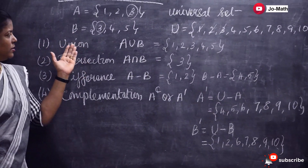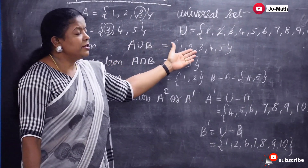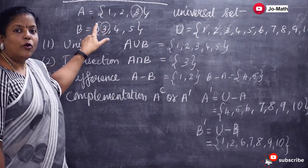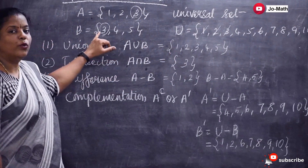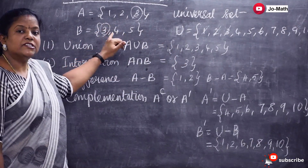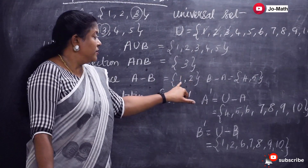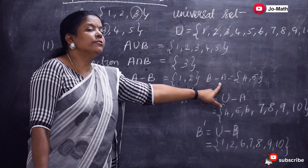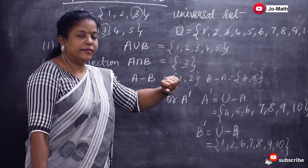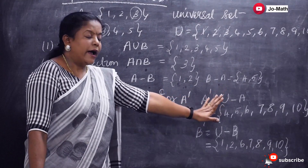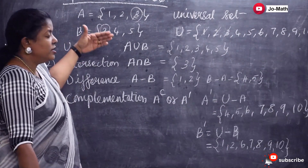So these are the set operations. The elements of A union B are present either in A or in B or in both. The elements of A intersection B are present in both A and B. A minus B means the elements present only in A, and B minus A means the elements present only in B. And A dash contains all elements which are not in A.